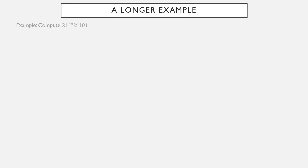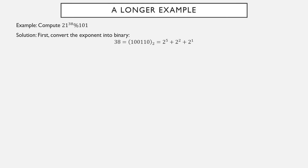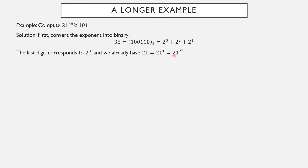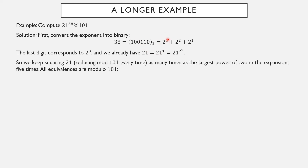Let's do a longer example to get more comfortable running this. Let's compute 21 to the 38th power mod 101. First step: convert the exponent into binary. That exponent of 38 is just 32 plus 6, or 32 plus 4 plus 2 — that's 2 to the 5th, 2 squared, 2 to the 1st. So there is the binary representation of 38. That last digit of 0 corresponds to 2 to the 0. We begin with 21, which is 21 to the 1st, or 21 to the 2 to the 0 power.